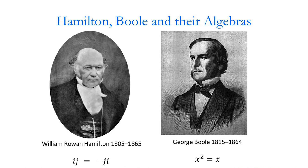On the left, you see the formula that I'll be talking about later: ij is not equal to ji, but is equal to minus ji. On the right-hand side, we've got George Boole. He contributed to many areas of mathematics including probability and differential equations, and his greatest achievement was to create an algebra of logic, now called Boolean algebra.